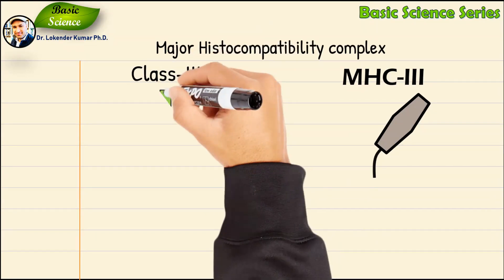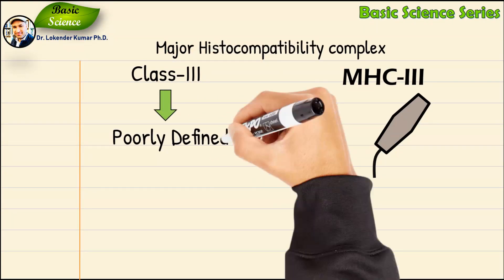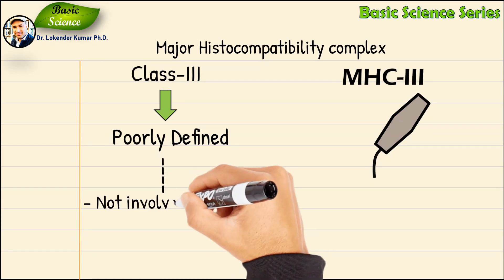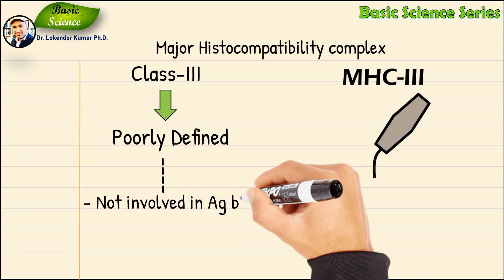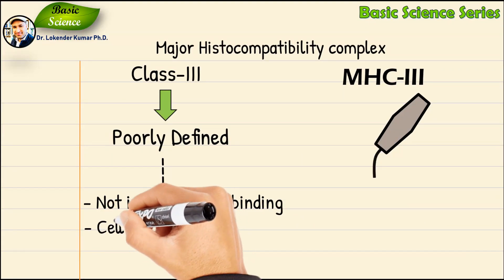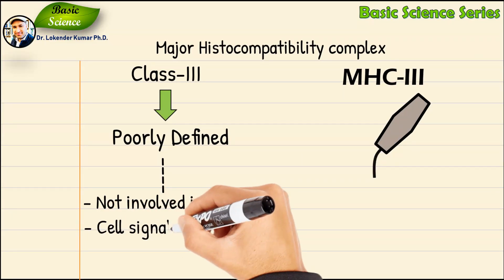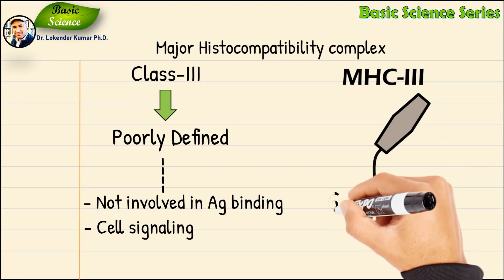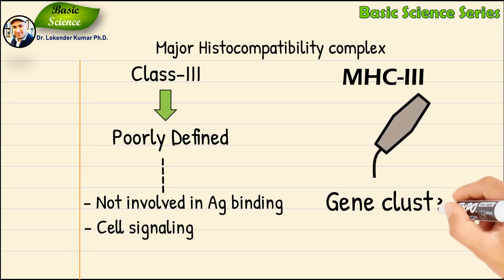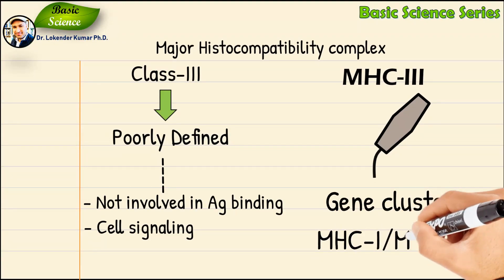MHC class 3 molecules are poorly defined both structurally and functionally. They are not involved in antigen binding; only a few of them are actually involved in immunity, while others are signaling molecules used in cell communication. They are mainly known for their genes, because their gene cluster is present between those of MHC class 1 and class 2 molecules.